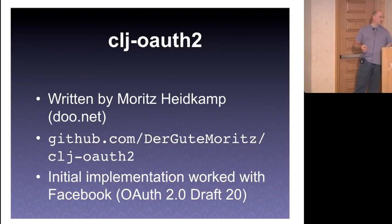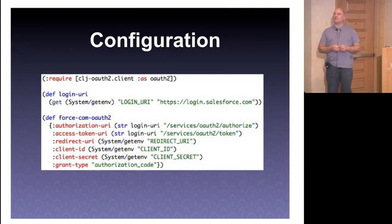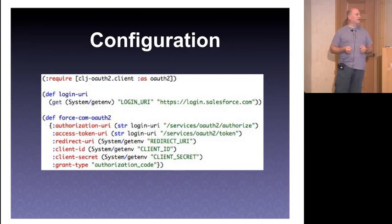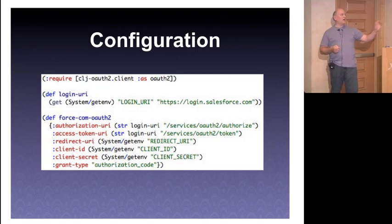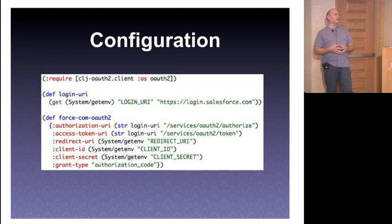If we step through what you'd need to do from your Clojure application — first, you need some configuration. You create a map passing the authorization endpoint where you send the user to authenticate, the token endpoint where you POST the code to get back the token, your redirect URI, the credentials you share with the authorization server, and the grant type. In this case it's authorization_code — that's what you use in a web server context.